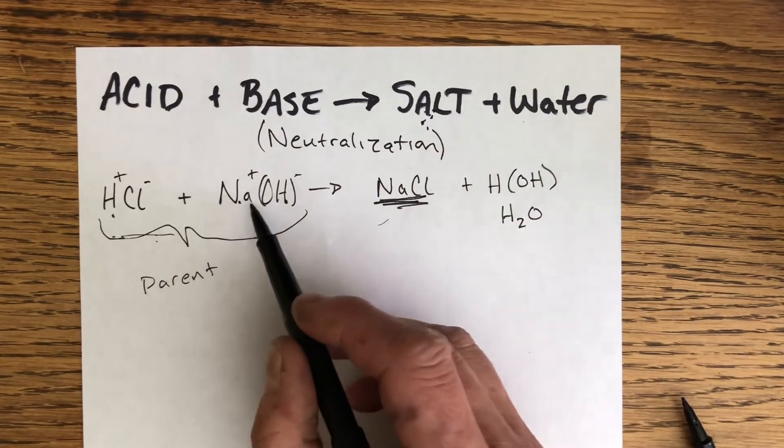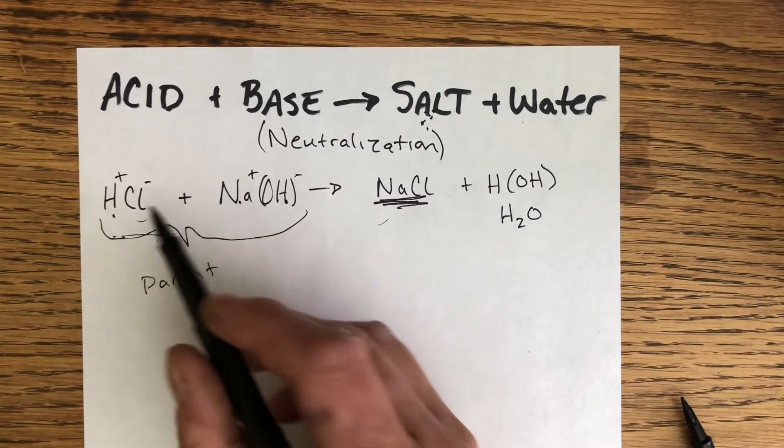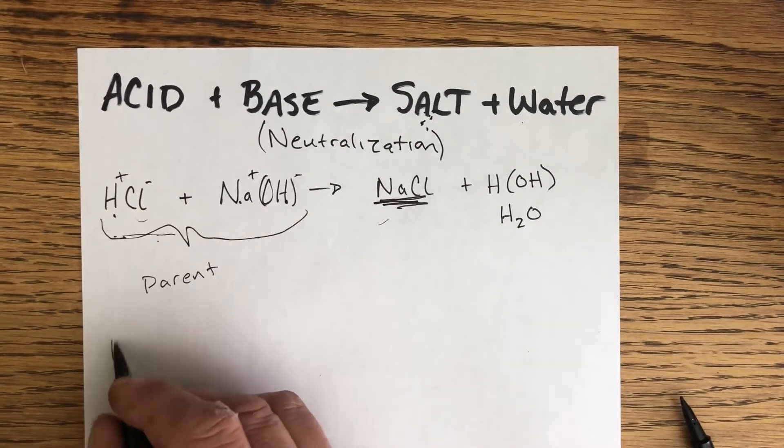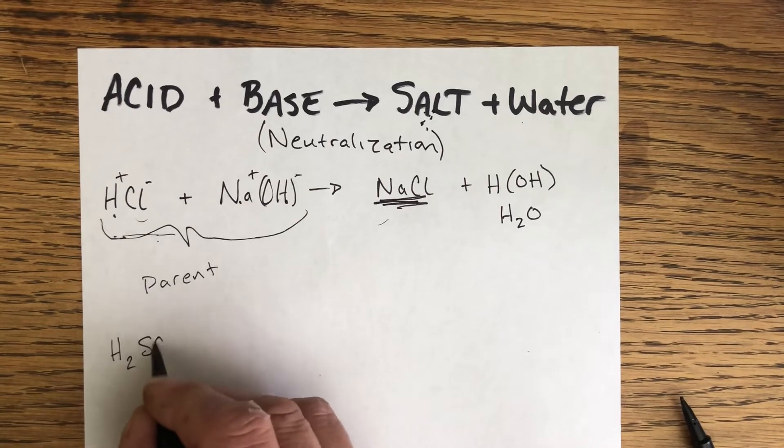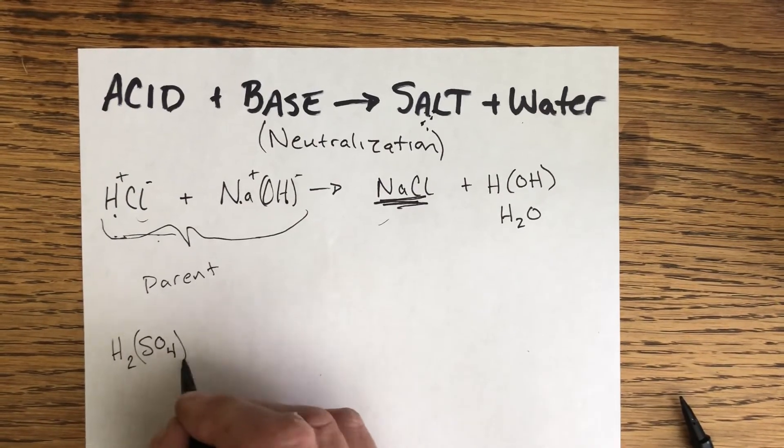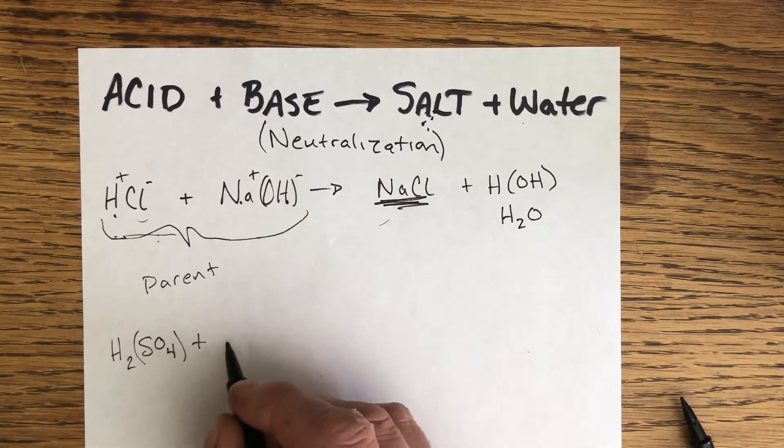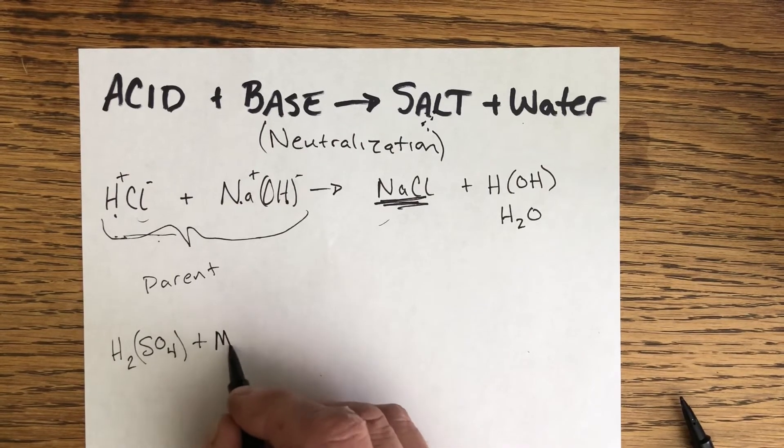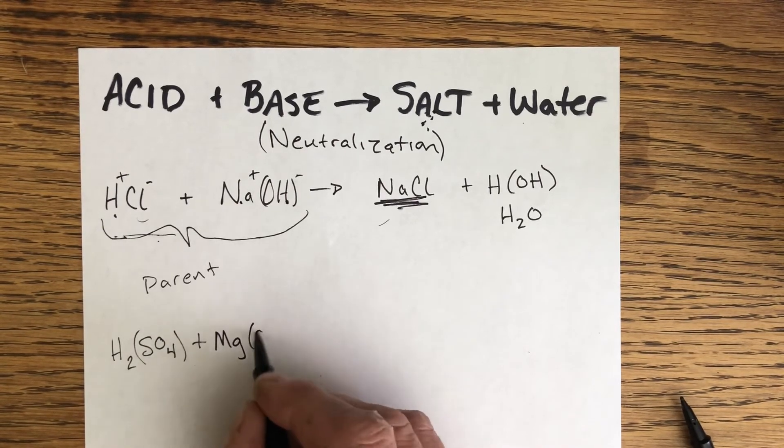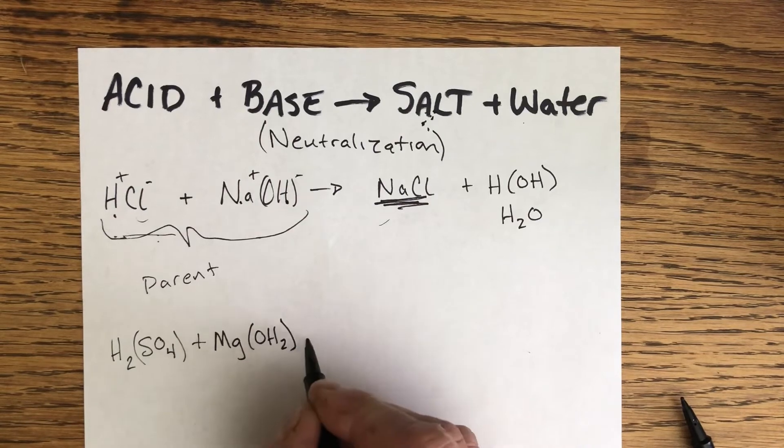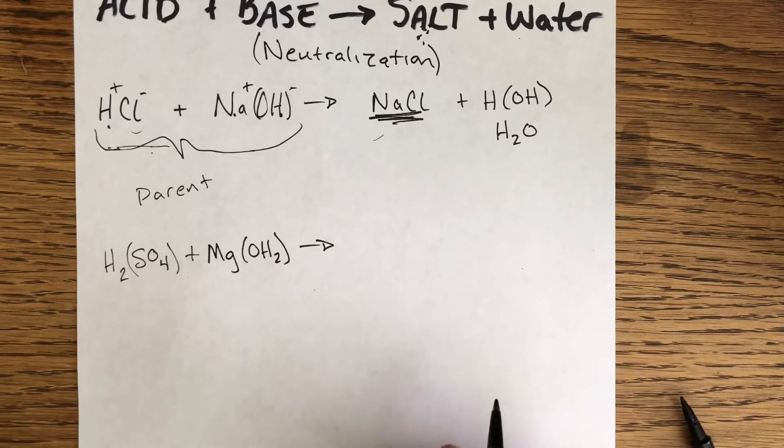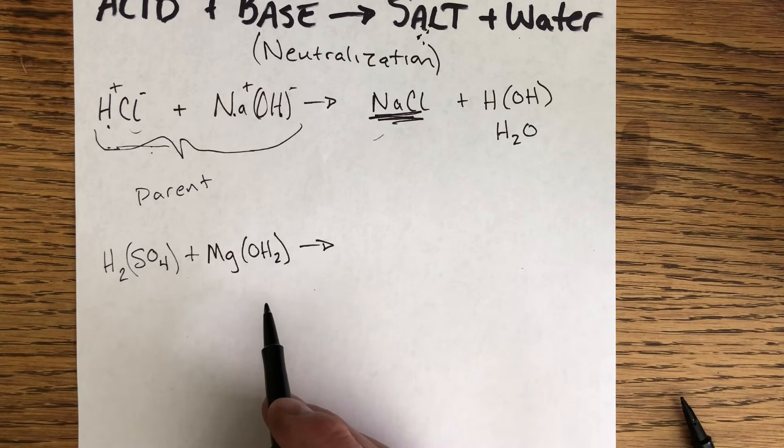Let's take another look here. If we had like H2SO4, this is sulfuric acid, and let's react that with something like magnesium hydroxide. When we react these two, the parent acid and the parent base here, we're going to make our salt.